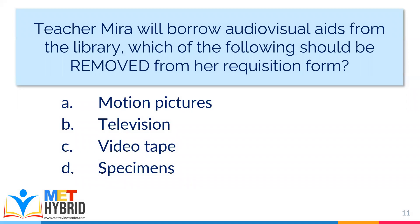Teacher Mira will borrow audiovisual aids from the library. Which of the following should be removed from her requisition form? A, motion pictures; B, television; C, videotape; D, specimen. The answer is letter D, specimen — which is a piece or sample of something meant for scientific study. For instance, medical students extract blood from patients to check its components; the blood is an example of a specimen. The other choices — A, B, and C — are examples of audiovisual devices or tools.